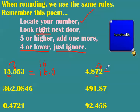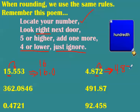That means my number will become 4.87. That one we rounded down — we ignored — and the previous one rounded up, so we added one more.